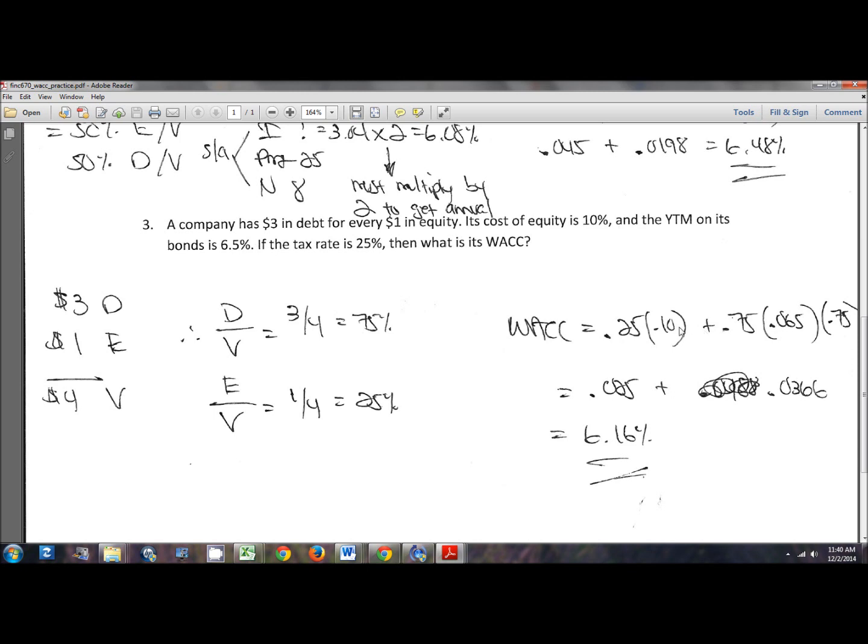So then those guys get inserted into the WACC equation in the exact same manner that we used above. So my weight of equity is 25%. My cost of equity is 10%. My weight of debt is 75%. My cost of debt is 6.5%. My 1 minus T is 0.75. So that gives you 0.025 plus 0.0366, which gives you an overall WACC of 6.16%.